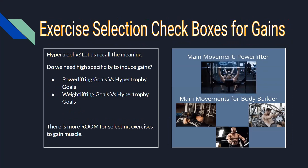Let's talk about the specificity of exercise selection regarding different goals. For a powerlifter, the goal is to maximize strength on the main three lifts: the barbell back squat, the barbell bench press, and the barbell deadlift — conventional or sumo. Hence these exercises must be selected so the powerlifter can improve over time. But for a bodybuilder or someone with physique goals, simply squatting, bench pressing, or deadlifting isn't strictly required, because what causes hypertrophy is mechanical tension, and mechanical tension can be produced via a variety of movement patterns.